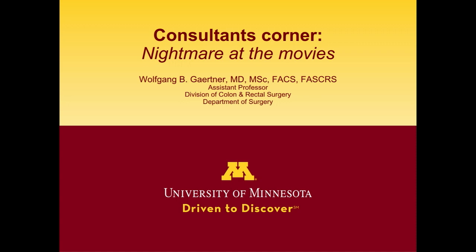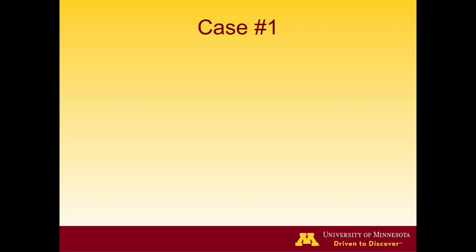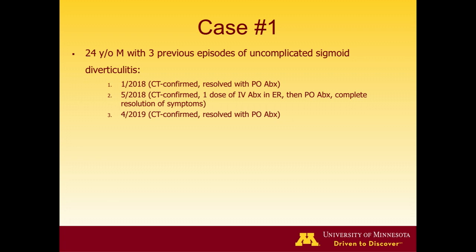We're going to mainly discuss non-malignancy cases, representing mainly what we've been discussing since noon: inflammatory bowel disease, some benign disease, and anal rectal disease as well. Case number one: a 24-year-old man who's had three previous episodes of uncomplicated sigmoid diverticulitis, based off of CT scans. He was seen in the ER once, and you can see the treatment.